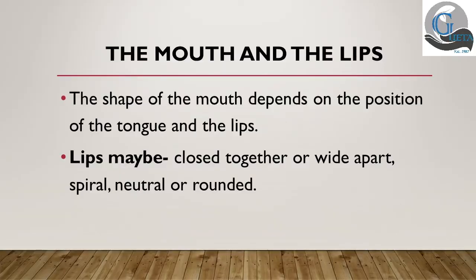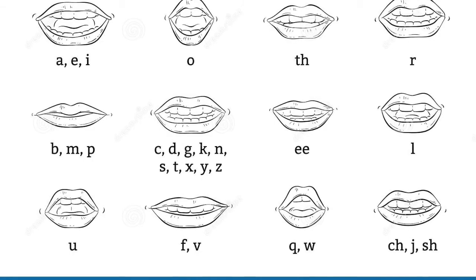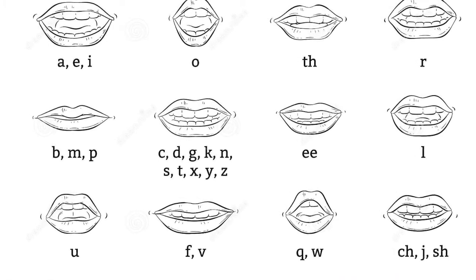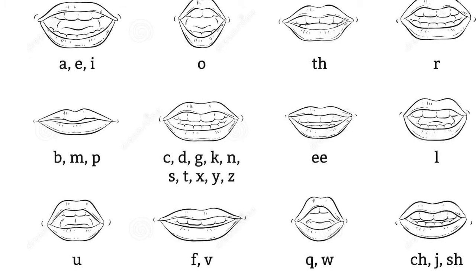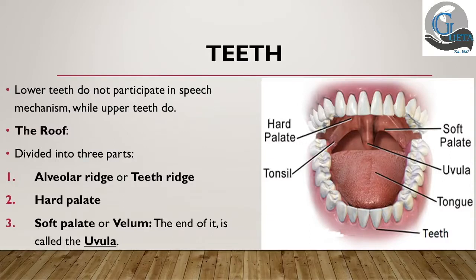The oral cavity — that is, the mouth — has a shape that depends on the position of the tongue and the lips. The lips can be wide open, closed, spread, rounded, half-rounded and so on. Within the mouth, the parts involved in the production of speech sounds are the roof, the teeth and the tongue. Please note that the lower teeth do not participate in the speech mechanism; it is only the upper teeth which are involved in the production of speech sounds.